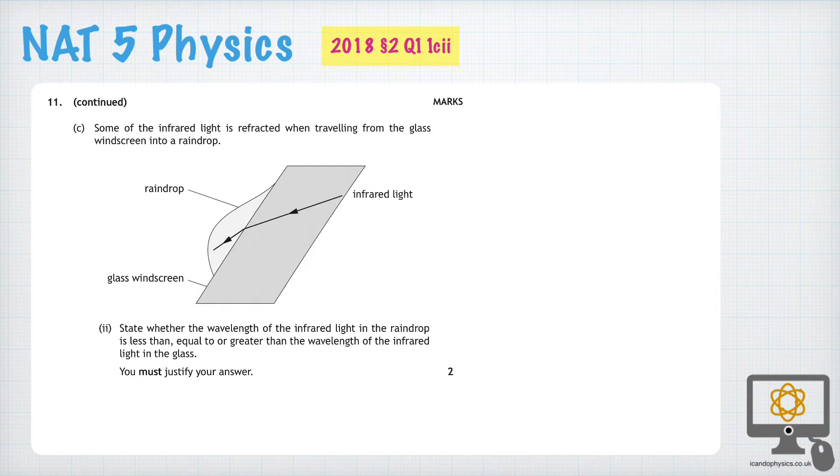Now if we look up the speed of light in different materials, in glass, the speed of light as it's given in the front of the booklet, the test paper, is 2 times 10 to the power of 8 meters per second.